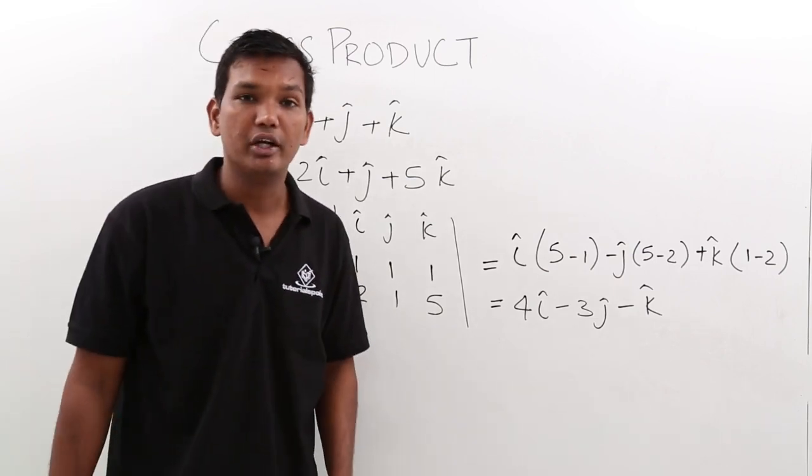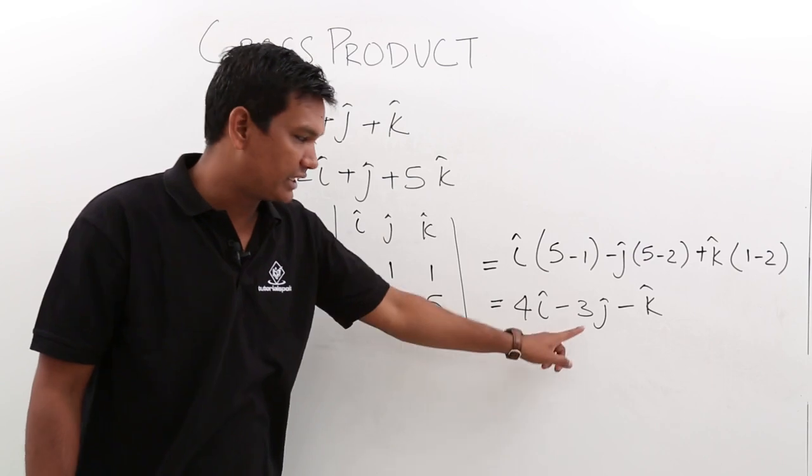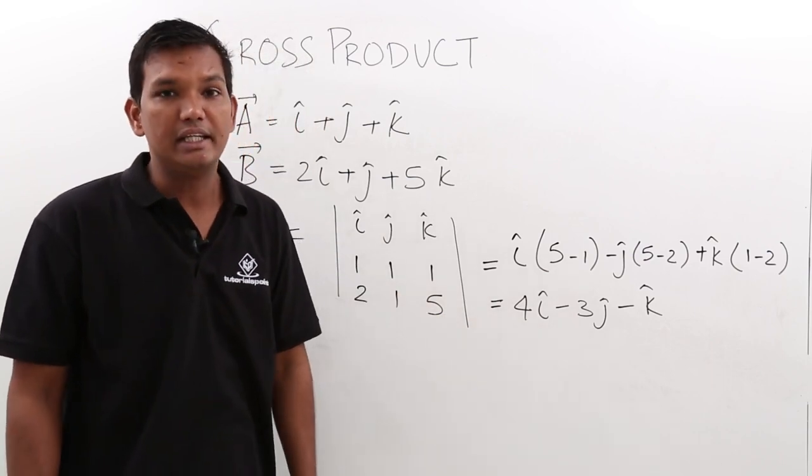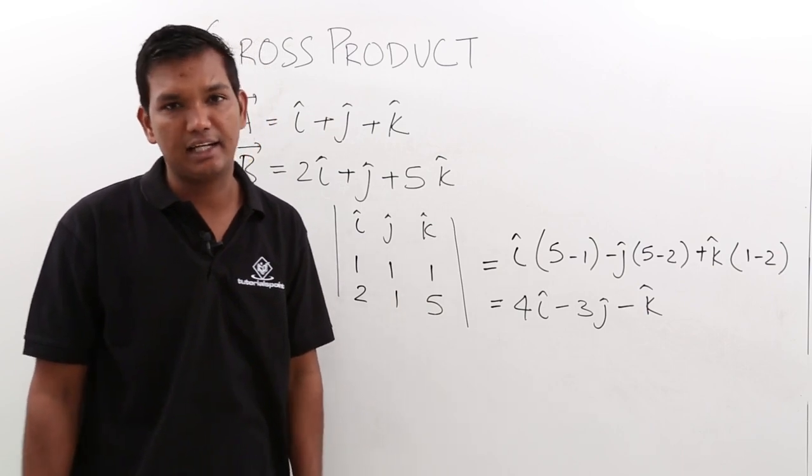Keep as a note, the result of a cross product will always be a vector quantity. While in case of dot product, the answer would always be a scalar quantity. Thank you.